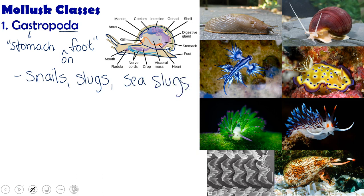Sea slugs are kind of like Rogue from X-Men — they go around stealing the superpowers of other organisms and using them for themselves. For example, Glaucus atlanticus steals nematocysts out of a Portuguese man-of-war, concentrates them into its own body without getting stung, and then deploys them against potential predators and prey. Another slug eats toxic chemicals out of sponges and stores those chemicals to use against predators. One also eats stinging cells out of hydroids. And one is actually a photosynthetic sea slug that steals chloroplasts out of algae and farms them in its own body.